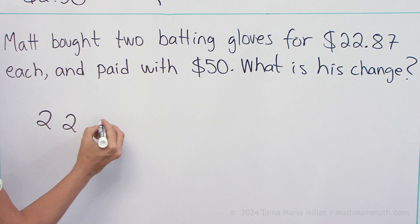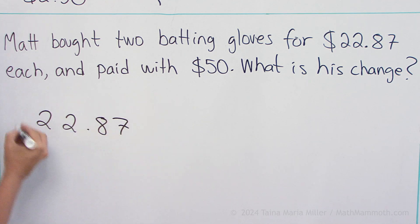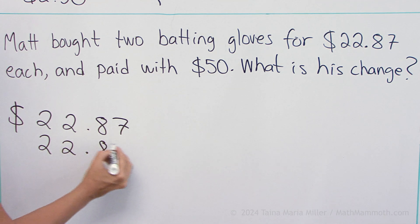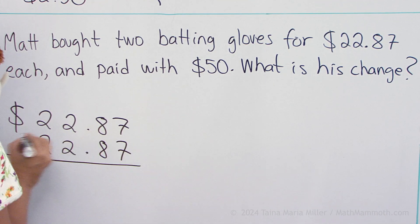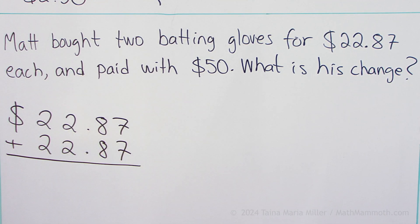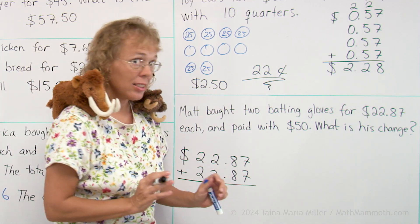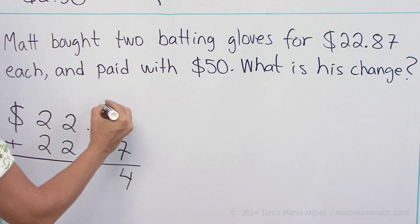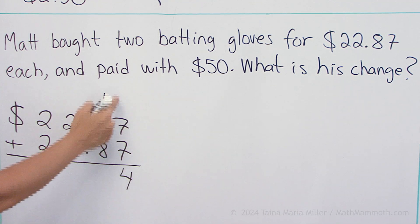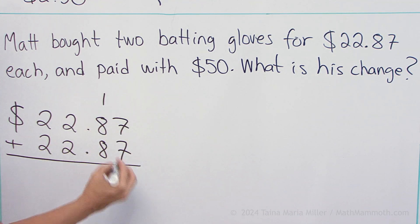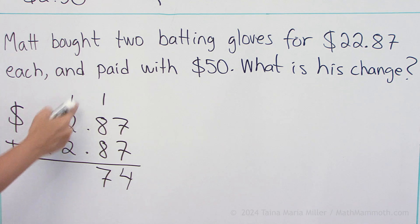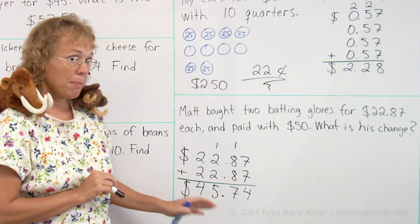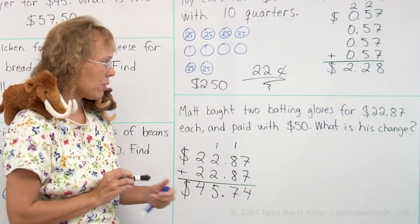Let's add again. $2.87 — just line up the numbers and the decimal points. And then we add as usual: $7 plus $7 is $14. Then $8 plus $8 is $16 plus $1 is $17. And regroup here, we get $5 and $4. So that's Matt's total for the two gloves.